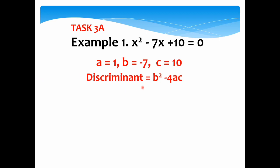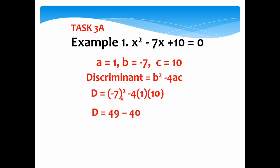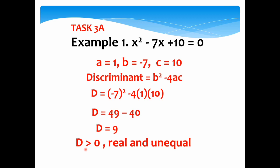Our discriminant is equal to b squared minus 4ac. Substituting the values, we have negative 7 squared minus 4 times 1 times 10. Simplifying, the square of negative 7 is 49, and the product of 4, 1, and 10 is 40. So d equals 49 minus 40, which is equal to 9. Therefore, since d is greater than 0, our roots are real and unequal.